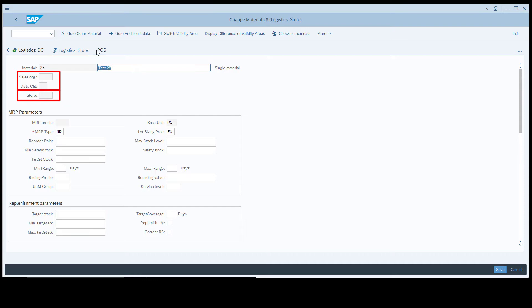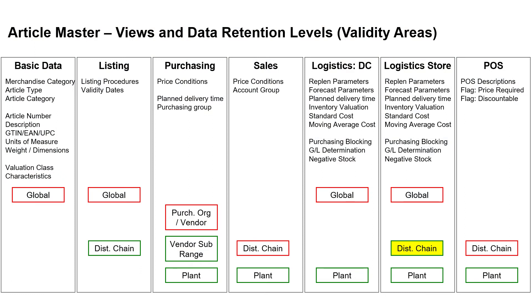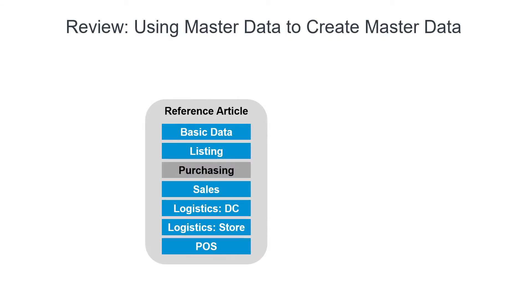Location-specific article master data is massive. Master data used to create master data, and so-called reference handling, makes least effort maintenance possible. Maintaining data at the highest possible validity area boils down to this: if you can maintain material master data globally, that's a lot less work than maintaining the same data by plant. Let's review how it's orchestrated, and then drill down.